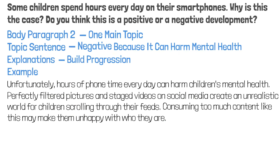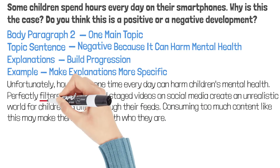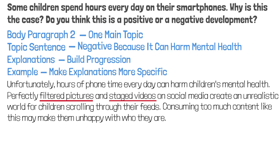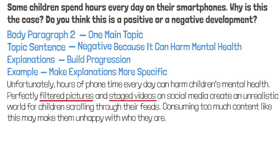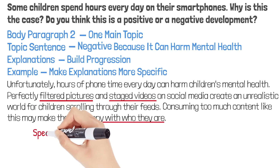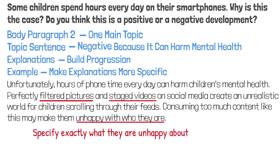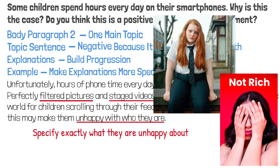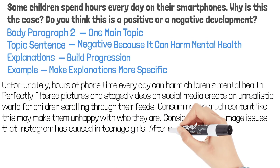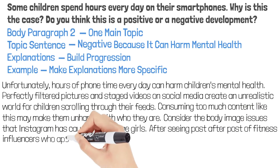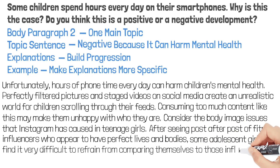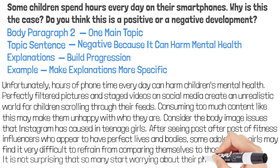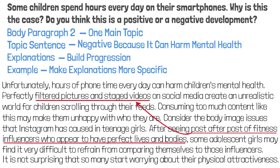Now I will give an example. The goal of an example is to make explanations more specific. Perfectly filtered pictures and staged videos are pretty general ideas — we can make them specific by talking about concrete things like mansions, luxury cars, or perfect bodies. 'Unhappy with who they are' is also a pretty general idea; in our example, we can specify exactly what they are unhappy about. My example is going to be about body image: 'Consider the body image issues that Instagram has caused in teenage girls. After seeing post after post of fitness influencers who appear to have perfect lives and bodies, some adolescent girls may find it very difficult to refrain from comparing themselves to those influencers. It's not surprising that so many start worrying about their physical attractiveness.' Do you see how the example is using details to support the explanations?